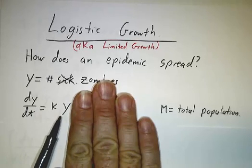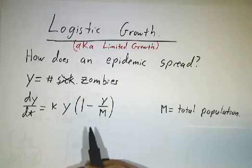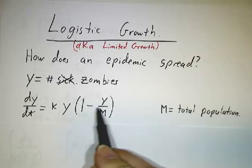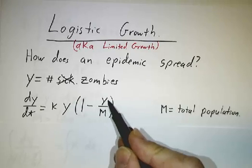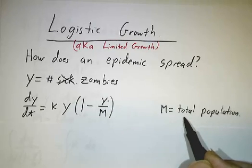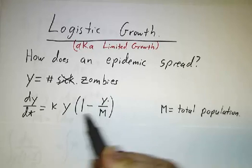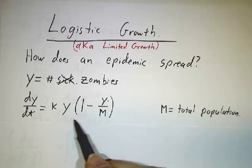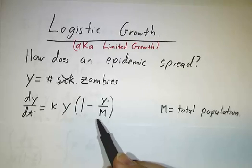The trouble is that after a while, you run out of people. A certain fraction of the time that a zombie runs into somebody, he's running into another zombie. A fraction y over M of the population, where M is the total population, is zombies. And so when a zombie runs into a zombie, it doesn't do any good. It's only when a zombie runs into people that he can advance the zombie cause.